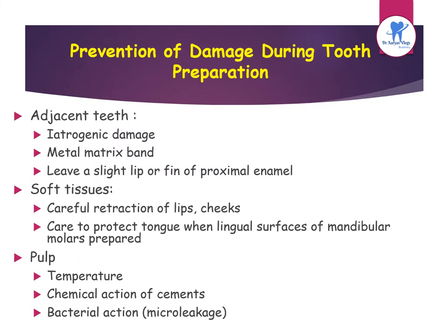Summarizing prevention of damage during tooth preparation: for adjacent teeth, use a metal matrix band or leave a slight lip or fin of proximal enamel. For soft tissue, carefully retract lips and cheeks and protect the tongue with a mouth mirror. For the pulp, the causes of injury are temperature, chemical action of cement, and bacterial action through microleakage.